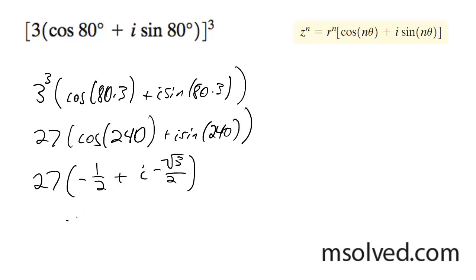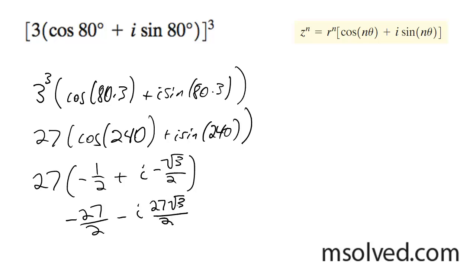So it's going to be negative. I'm going to distribute this. It gives -27/2 minus i times 27 root 3 over 2. And that's it, that's the solution.